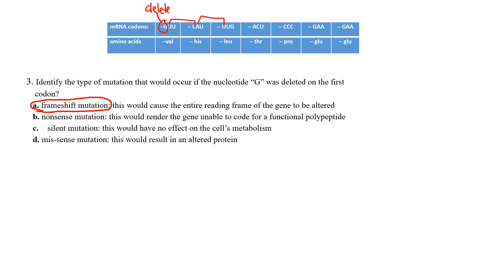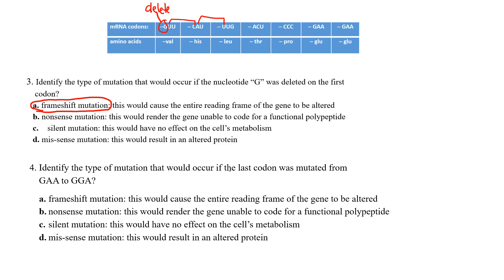And the last one, it says identify the type of the mutation that would occur if the last codon, so here's the last codon GAA, was mutated to GGA. So you can see that this middle nucleotide is mutated. It went from an A and it got mismatched to a G.